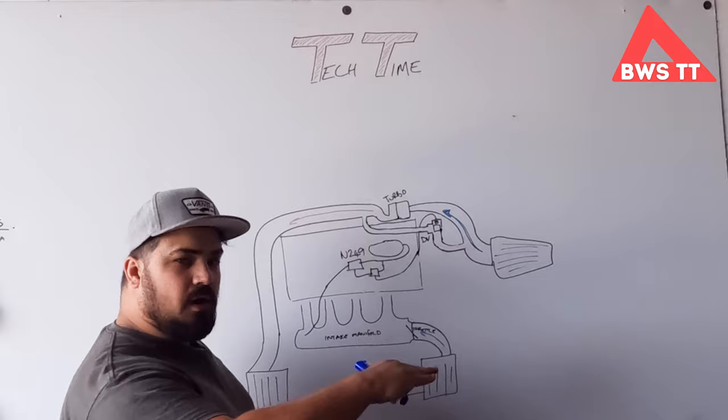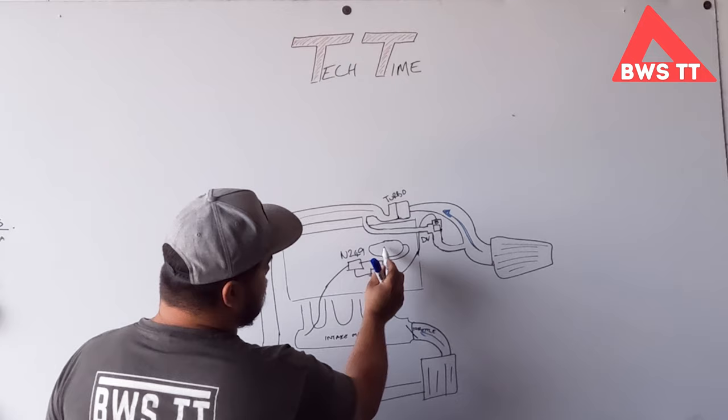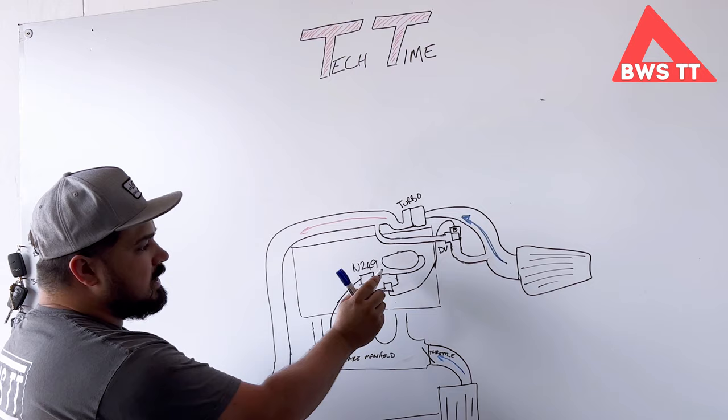So as you come off the throttle, the ECU controls this valve here, which utilises vacuum that is stored here by building up from the intake manifold. And it uses that vacuum to control this valve here, which is the diverter valve.